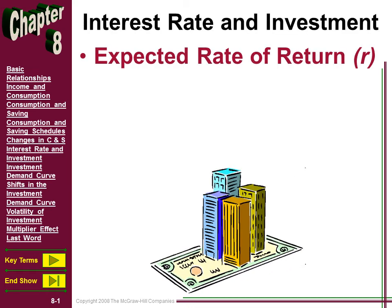Welcome back to our third lecture in our series of lectures on basic macroeconomic relationships. In the previous two lectures, we introduced the relationship between disposable income, consumption, and savings. And that led us to the concepts of average propensity to consume and average propensity to save.